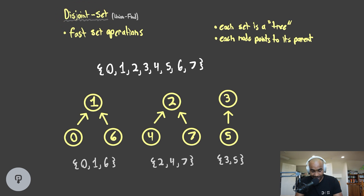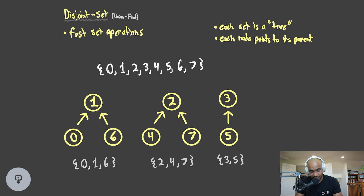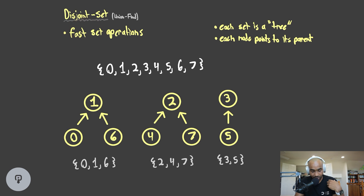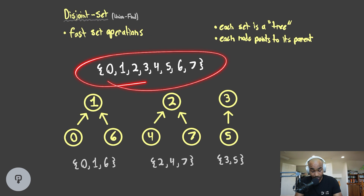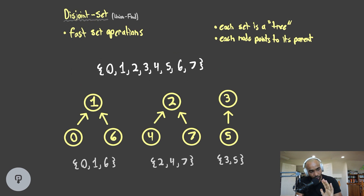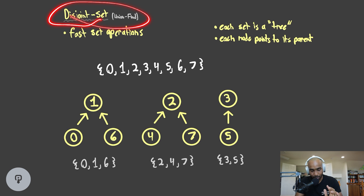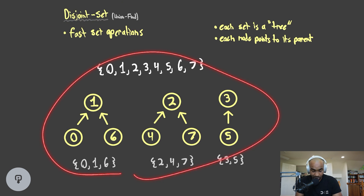We're going to look at the disjoint set data structure, sometimes called the union find data structure. This is a very specific data structure you're not going to see too often because it has a very special use case. This data structure is going to give us a very fast runtime over a certain set of operations dealing with sets. Before we even get into those operations or the problem we're trying to solve, let's go into what the structure looks like.